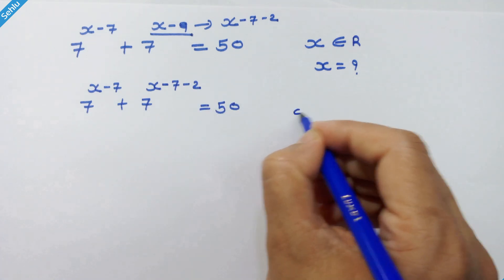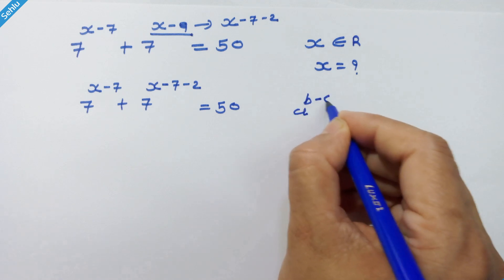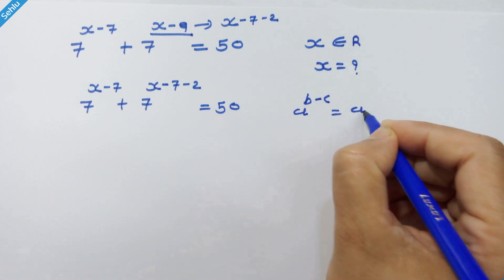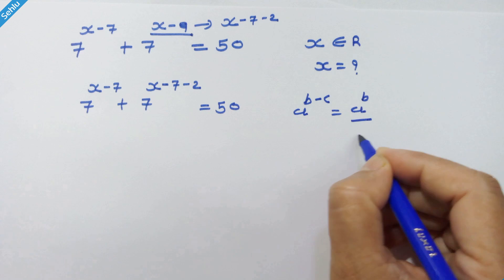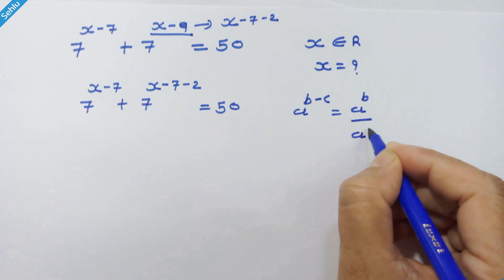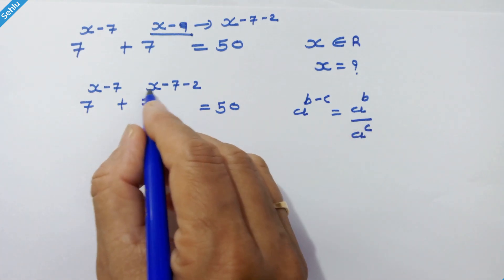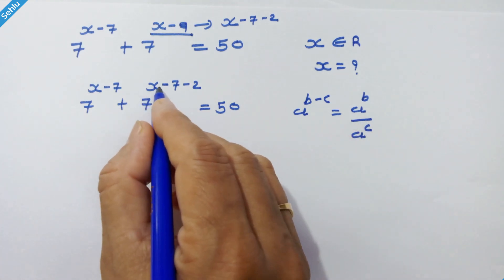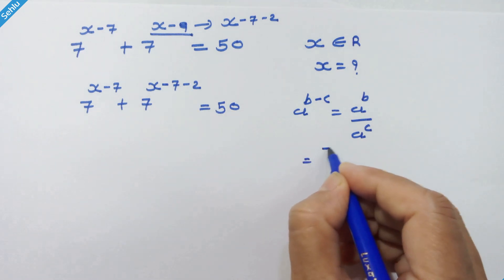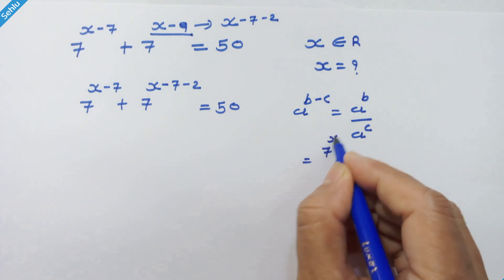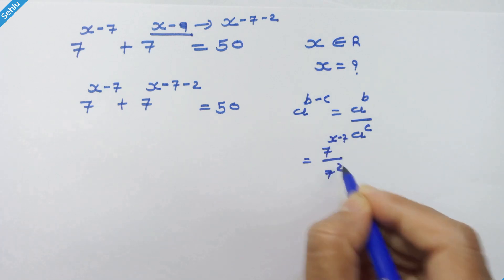Here we will use this rule: if we have a raised to b minus c, then it can be written as a raised to b upon a raised to c. So in this manner, 7 raised to x minus 7 minus 2 can be written as 7 raised to x minus 7 upon 7 square.